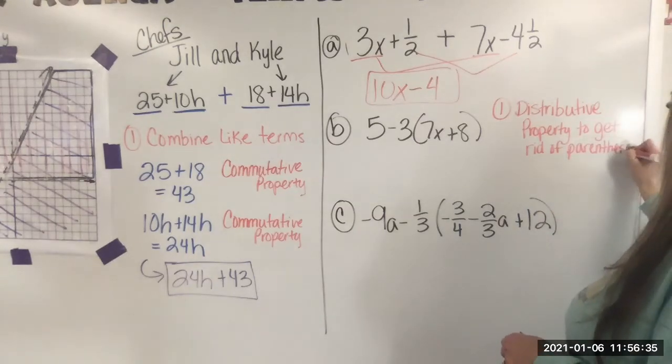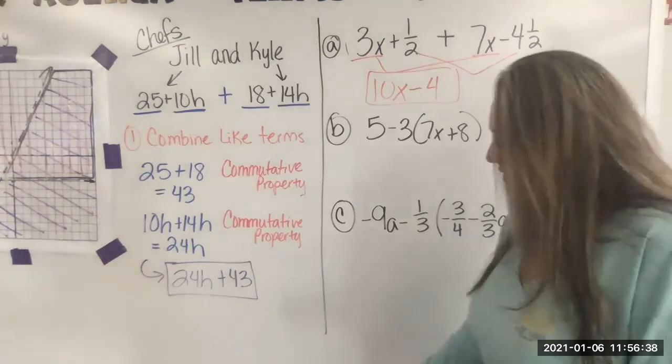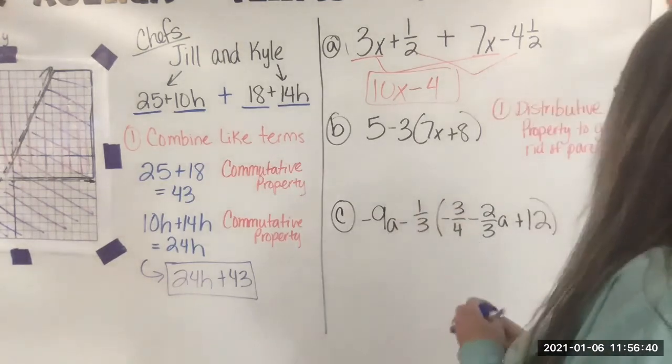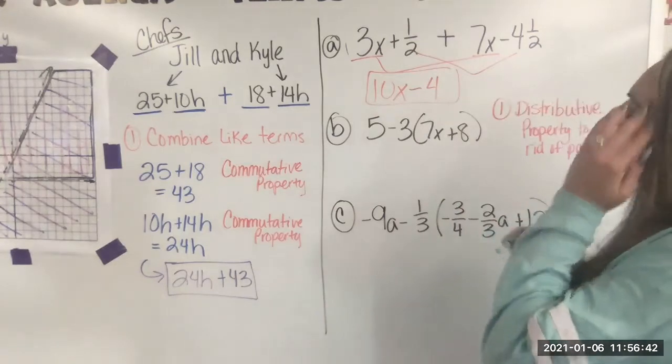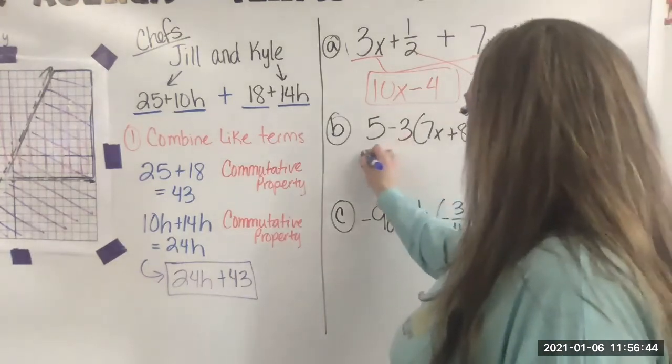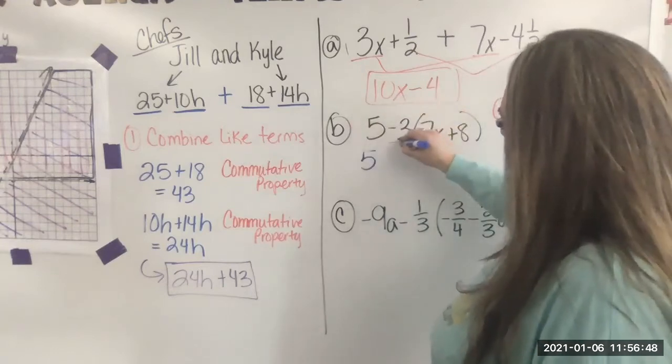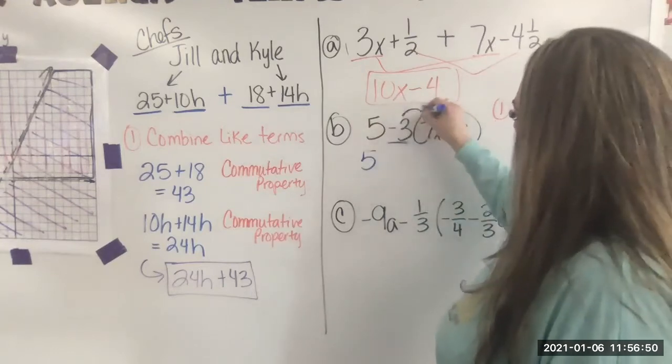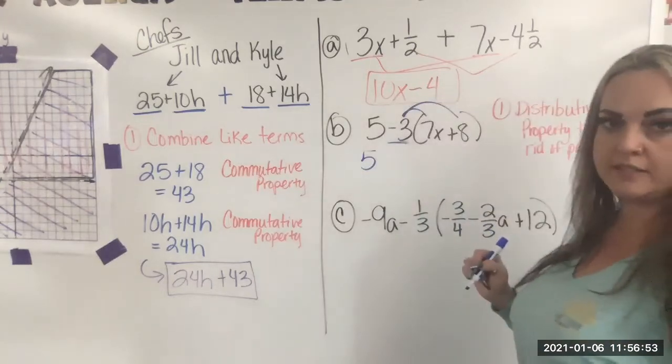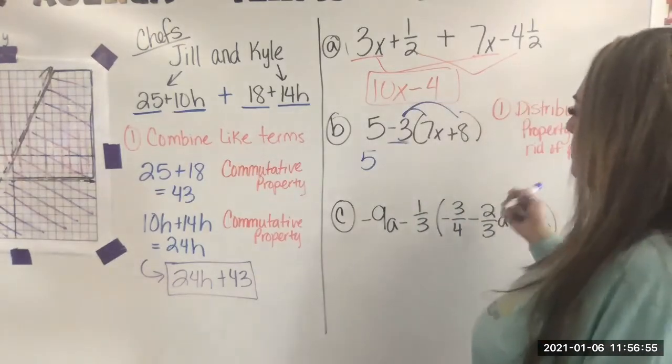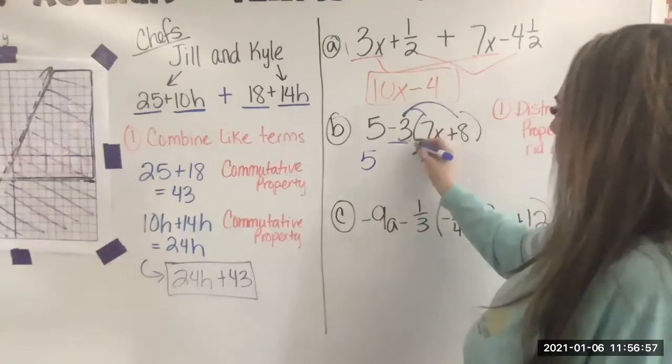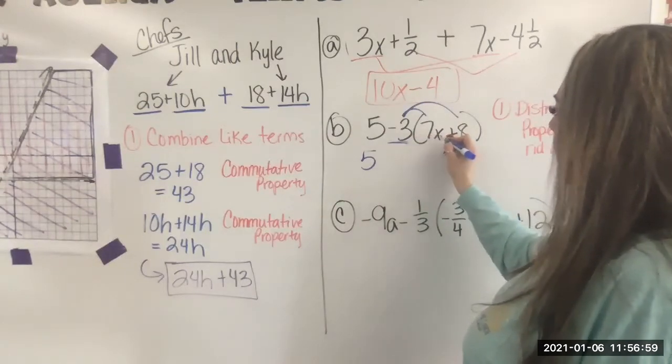Remember everything I write, you're writing in your book. So if you need to pause and continue when you're ready, that's okay. So the five stays the same. The five is just a five. That's a constant. But then we have this negative 3 that we have to distribute to what's in the parentheses. Distributive property means multiply. So here I go. Negative 3 times 7X.